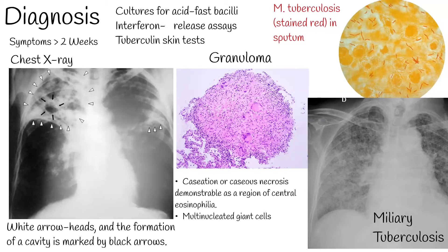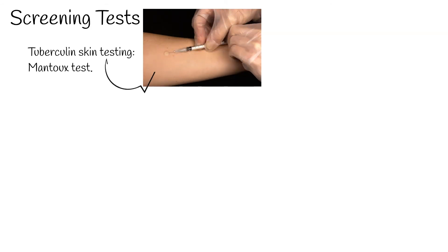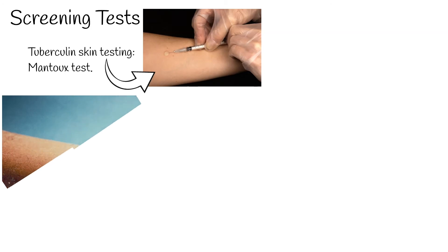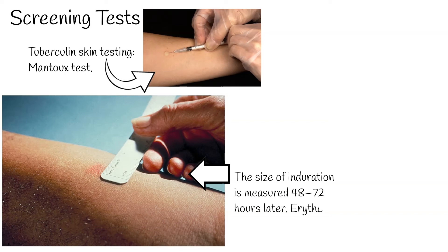Screening tests: Tuberculin skin testing — the Mantoux test. The Mantoux reaction following the injection of a dose of purified protein derivative is the traditional screening test for exposure to tuberculosis. After injection, if skin induration occurs, it can be considered positive. Skin induration size may differ according to risk of tuberculosis. If the patient has a very low risk of tuberculosis infection, then a larger skin induration is required to consider the test as positive.